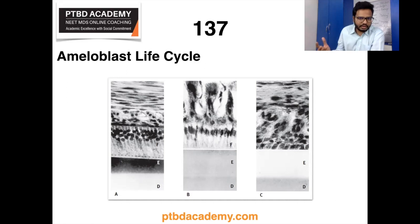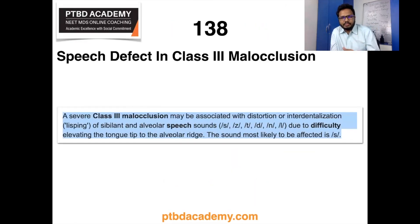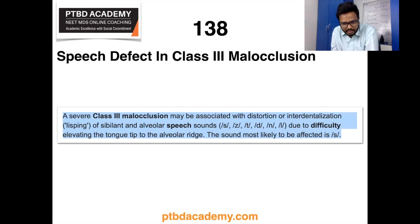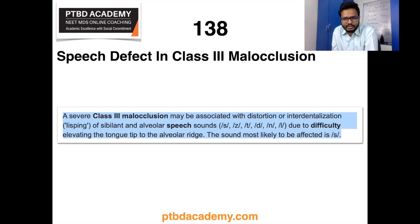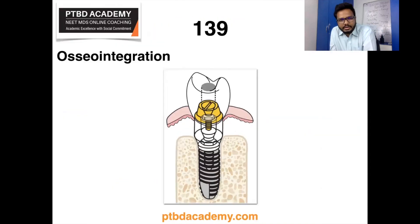Moving on: speech defects in Class 3 malocclusion. A severe Class 3 malocclusion may be associated with distortion or interdentalization — that is, lisping — of sibilant and alveolar speech sounds due to difficulty in elevating the tongue tip to the alveolar ridge. The sound most likely to be affected is 'S', because of difficulty elevating the tongue tip to the alveolar ridge.